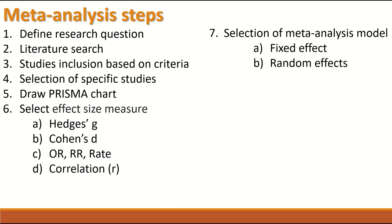The next step is selecting a model for the meta-analysis — either a fixed-effect or random-effect model. Once the criteria are fulfilled and the studies to include are identified, the meta-analysis can be run. A heterogeneity test is performed to estimate the degree of heterogeneity between the selected publications, producing a P-value and an I-squared value.